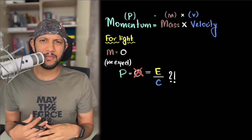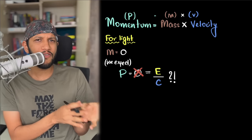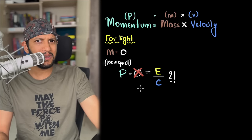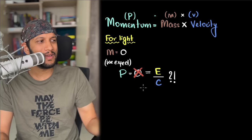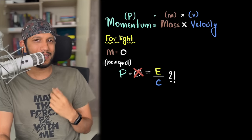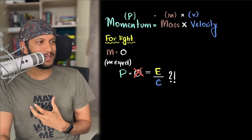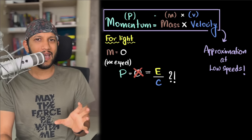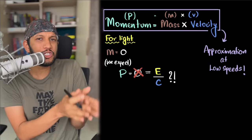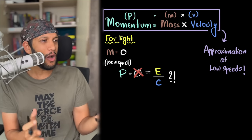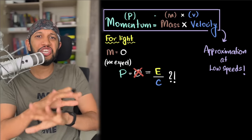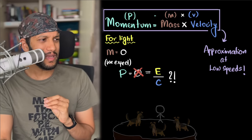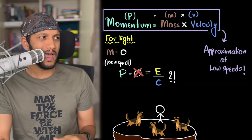Feynman asks: why are you so bothered about the fact that something can have momentum even though it doesn't have mass? I say because momentum equals mass times velocity — if you don't have mass you won't have momentum. Feynman responds: the problem is that's an approximate formula that only works for a very special case, when things are moving much slower than the speed of light. How can you generalize something so special and say that's what momentum is? It's kind of like being stuck on an island that only has brown dogs...